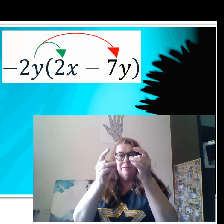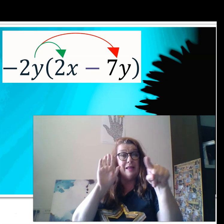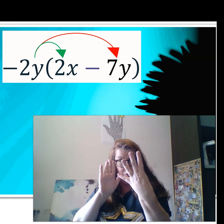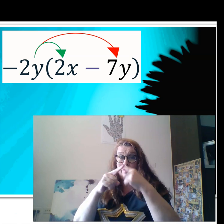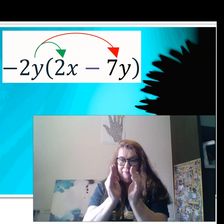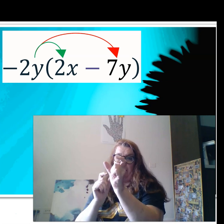We're going to follow the rules using the number and the negative. Negative two times two is negative four, and y times x when we push them together to follow the rule, it's xy.